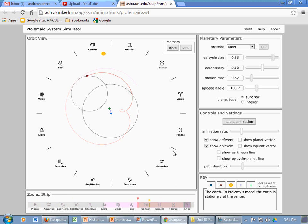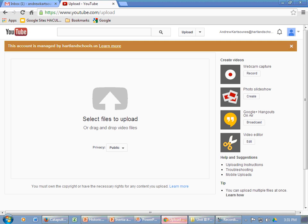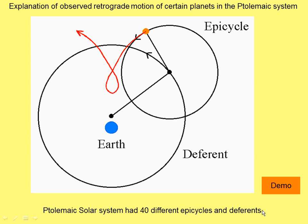In order to actually fit the data, they eventually had to get to the point of having something like 40 different epicycles and deferents for the planets that they could see. The Ptolemaic system got extremely complex, circles on circles on circles on circles.